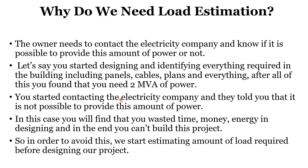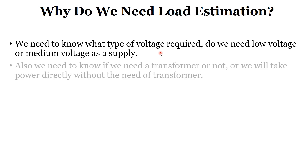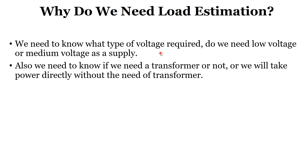To avoid all of this, we start estimating the load required before we design the project. Another reason is that we need to know what type of voltage supply is required — low voltage or medium voltage. This depends on the amount of load required. For a low load, we take power from the grid directly at low voltage. For a high amount of power, we use medium voltage and will need a transformer in our building. We also need to know whether we need a transformer or not, which depends on the load required.